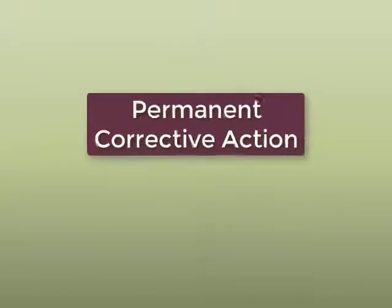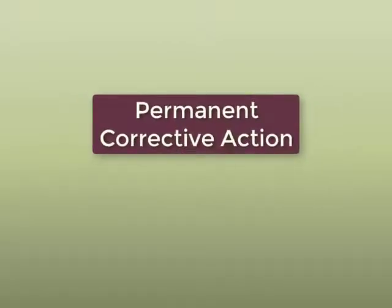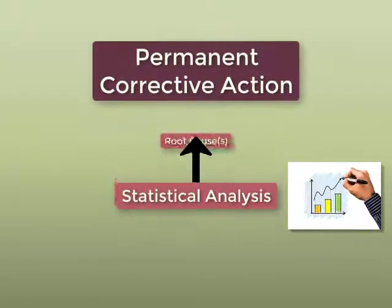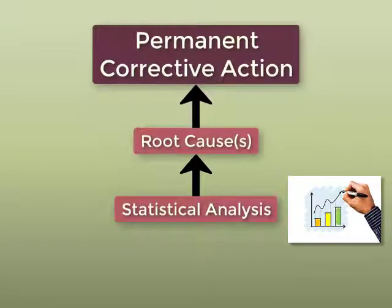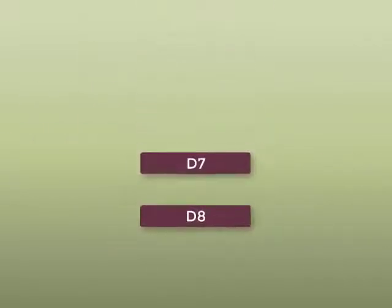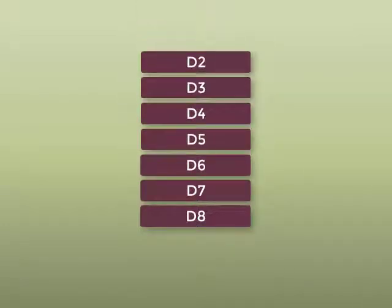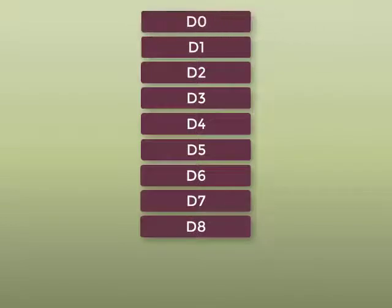The focus of the 8D approach is on permanent corrective action by using statistical analysis to identify the root cause or root causes. The 8D approach originally consisted of eight steps or disciplines which is where it got its name however the 8D approach was later augmented by adding an initial planning phase which is referred to as D0 to represent that initial step.